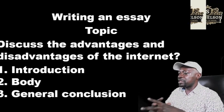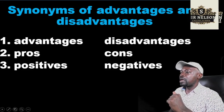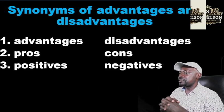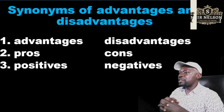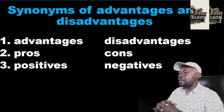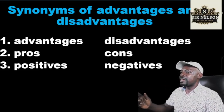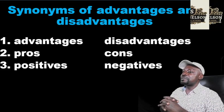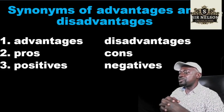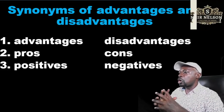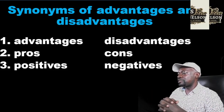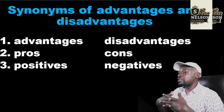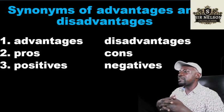In another video, we shall learn how to write the body and the general conclusion. We have seen the words advantages and disadvantages. Now these two words have what we call synonyms. Synonyms in English mean different words, same meaning. There are many other words you can use instead of advantages and disadvantages. Don't use the word advantages and disadvantages again, because the word already appears in the question.